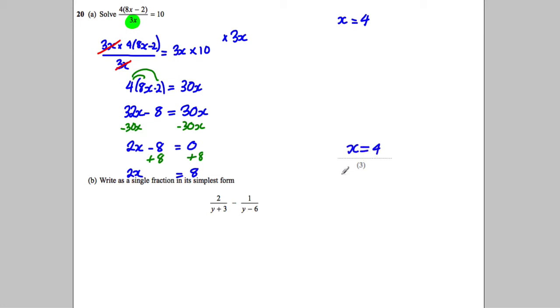Now obviously after a lot of steps like that, you can never be 100% sure of your answer, so let's go back and check it. 3 multiplied by X on the bottom would be 12. 8 multiplied by 4 is 32, take away 2 would be 30, so this would be 30. 4 multiplied by 30 is 120, so 120 divided by 12 is indeed 10. You know you got the right answer, so you can feel confident.